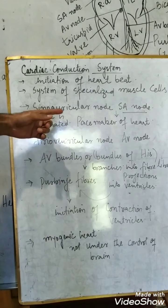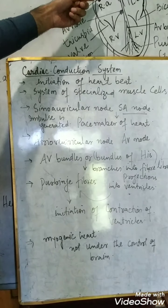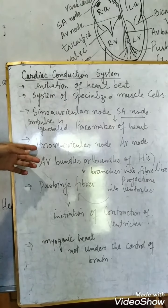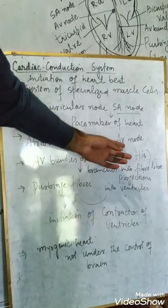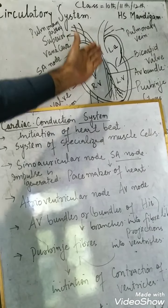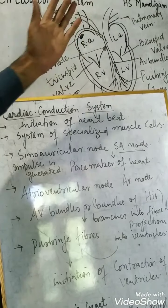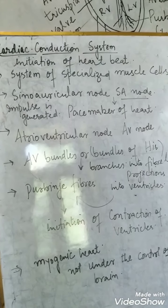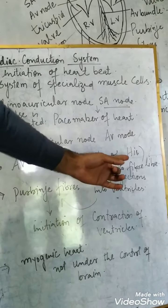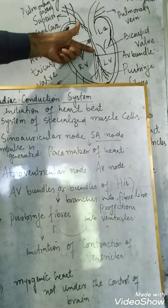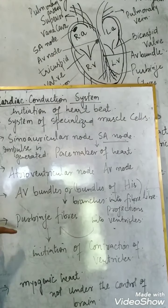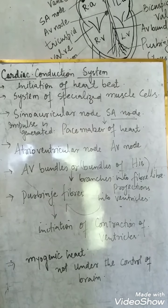The first is called the sinoatrial node or SA node, present at the upper side of the right atria. The second is the atrioventricular node, also called the AV node, present at the base of the right atria near the septum. The third type are called the AV bundles or bundles of His. These branch into the ventricles and give rise to fiber-like structures called Purkinje fibers, which are also specialized muscle cells.